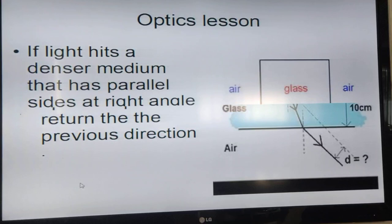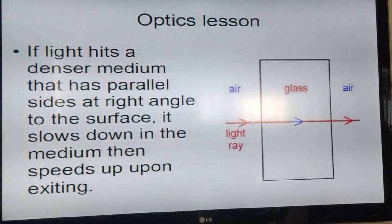If light hits a denser medium like glass perpendicular to the surface, then what happens is it slows down, goes right through at slower speed, and when it exits it speeds up again, but it's a straight line.